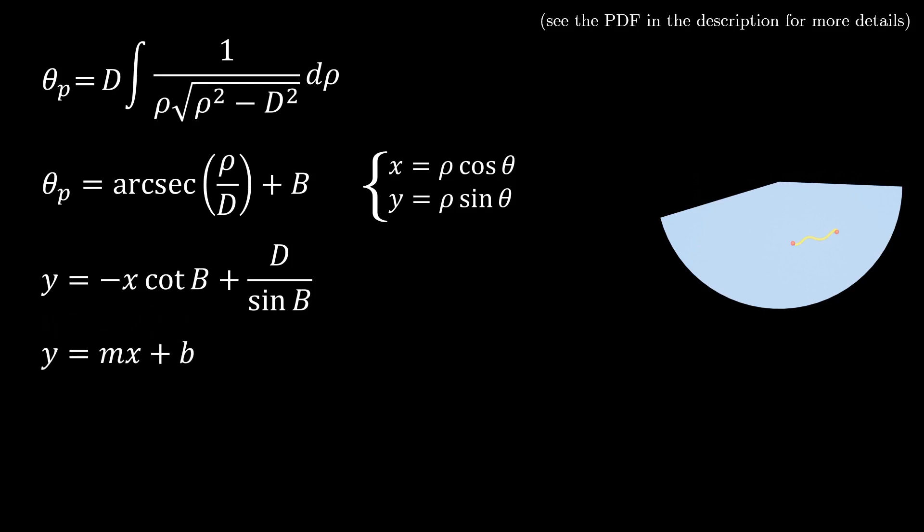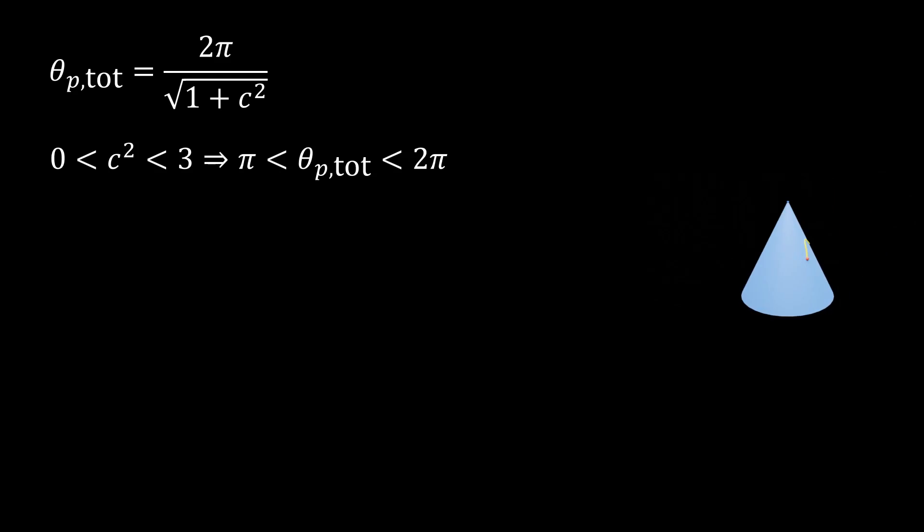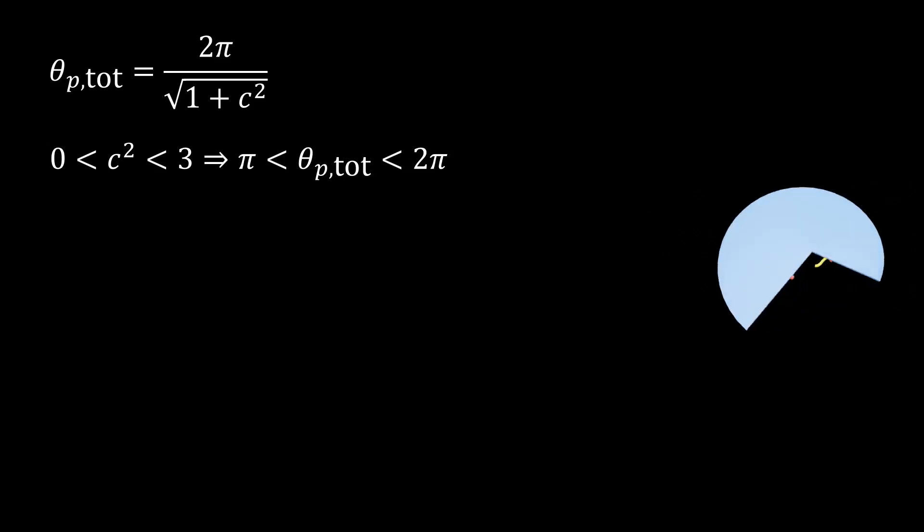There's one more thing we should keep in mind. From the relationship we derived earlier, the central angle of the wedge is 2 pi over the square root of 1 plus c squared. If c squared is between 0 and 3, then the central angle is between pi and 2 pi, in which case it's possible that the path between our two points will be blocked by the gap that's made when we cut the cone. This isn't really an issue though, since the cone's radial symmetry means that it doesn't really matter where we make the cut. If we fold the cone back up and cut elsewhere, we get our nice straight line back.